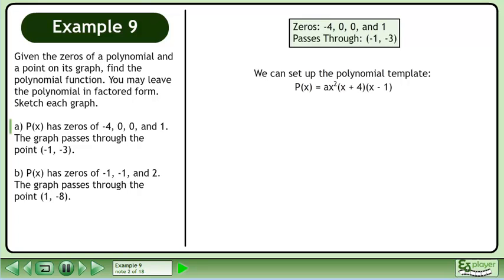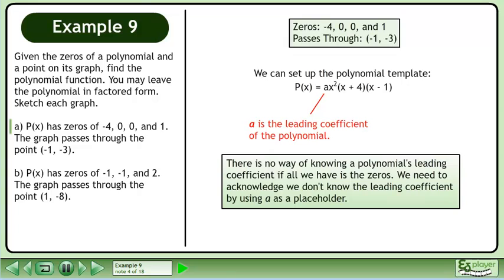We can set up the polynomial template: P(x) = a(x²)(x + 4)(x - 1). a is the leading coefficient of the polynomial. There is no way of knowing a polynomial's leading coefficient if all we have is the zeros. We need to acknowledge we don't know the leading coefficient by using a as a placeholder.